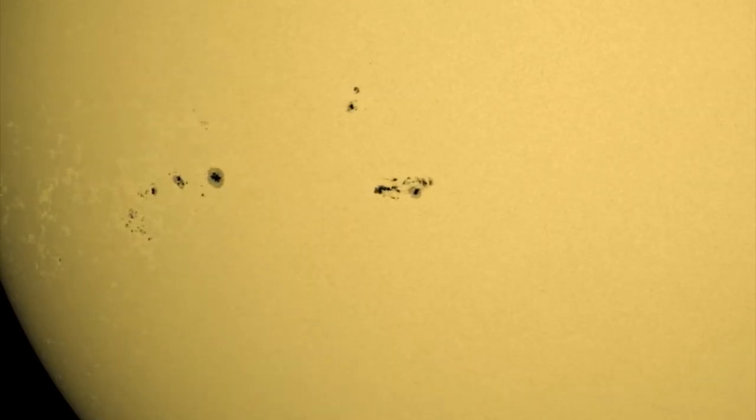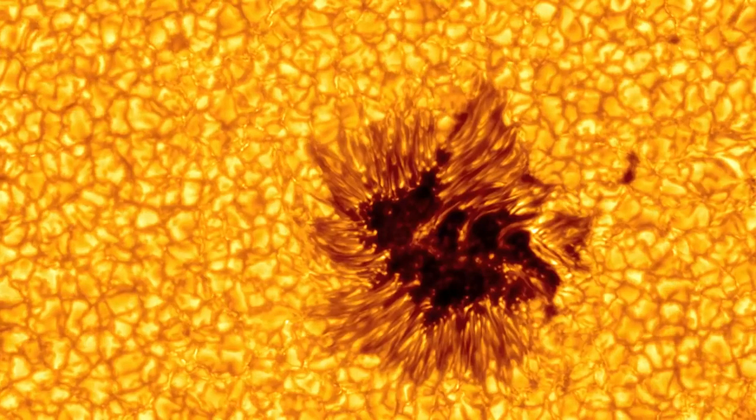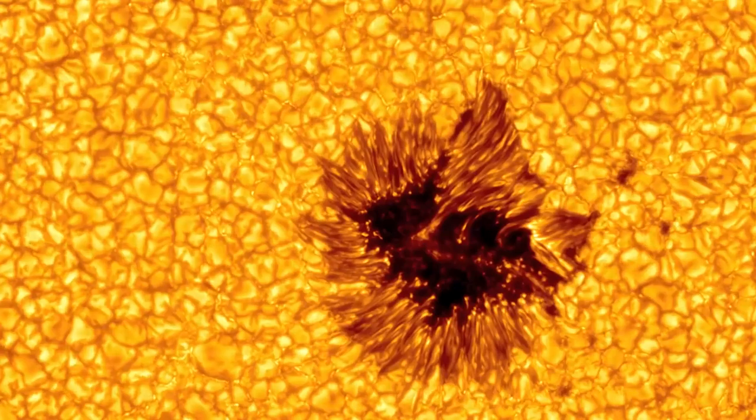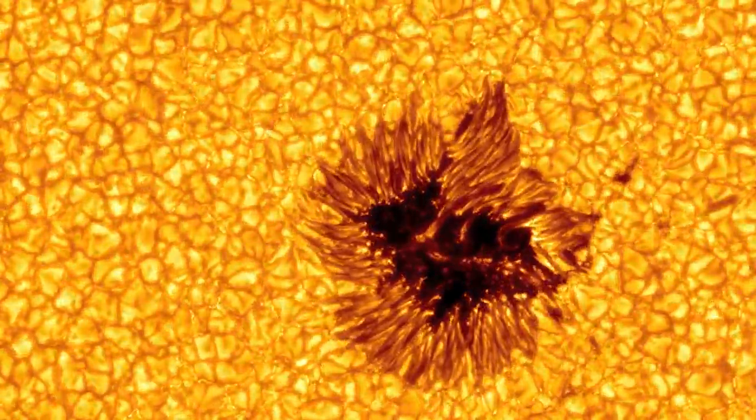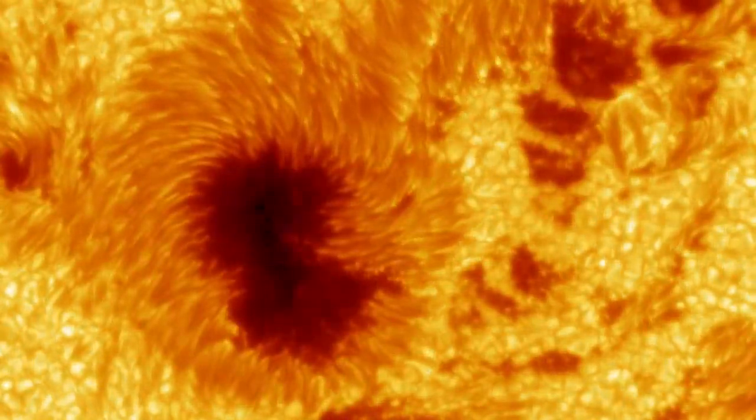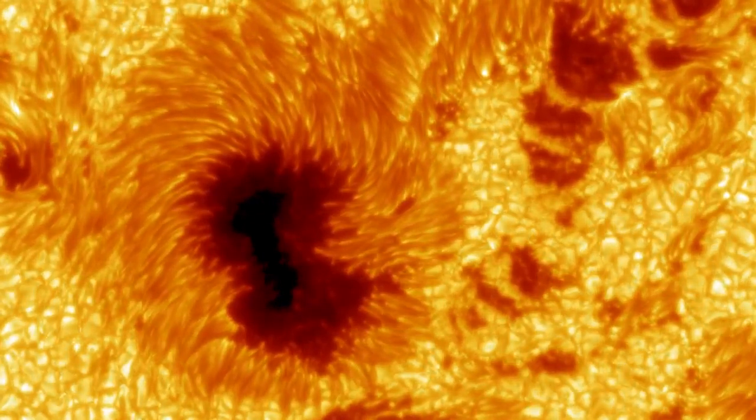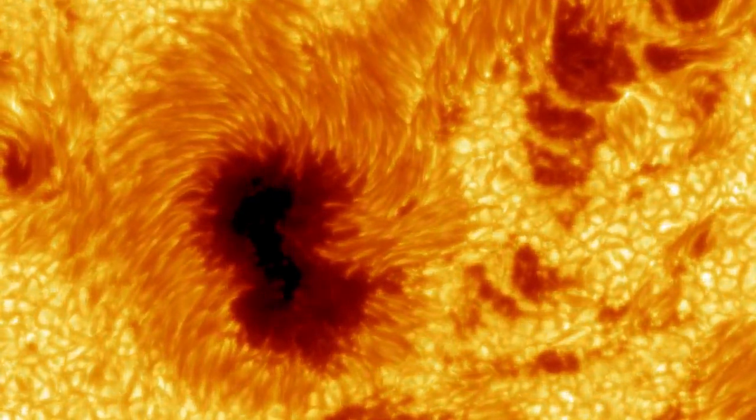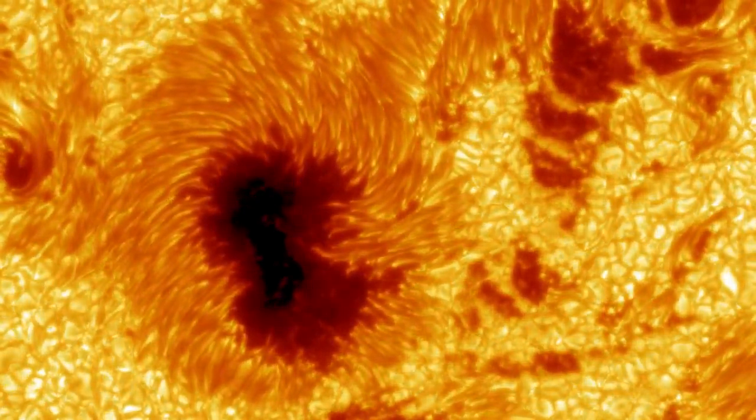Sunspots appear dark because, in these regions, the strong magnetic field limits the transportation of heat to the surface. This process makes these locations much cooler and thus darker in appearance than the surrounding brilliant surface.